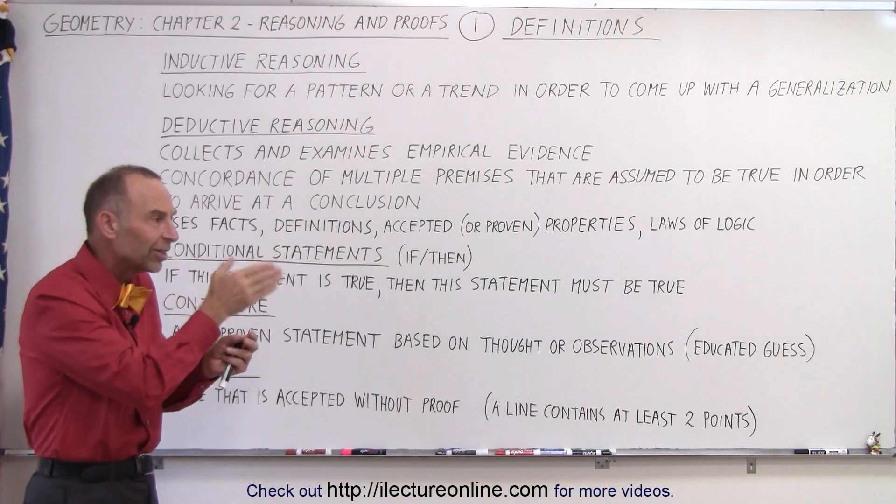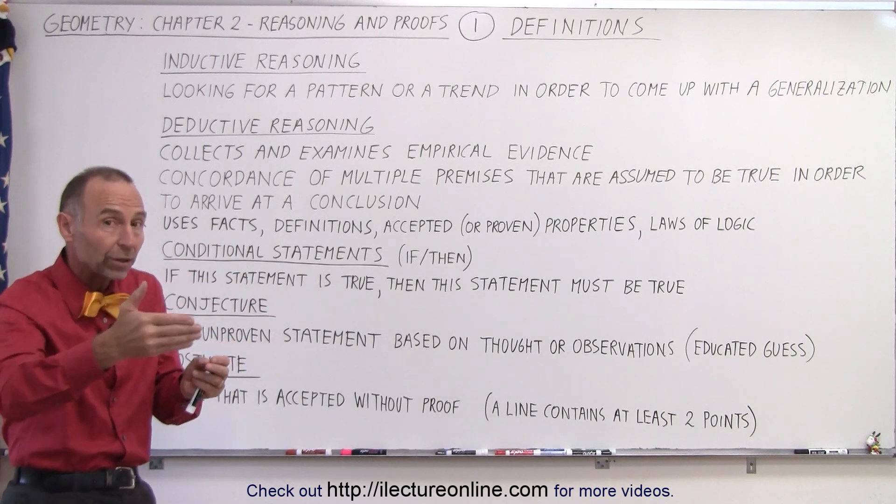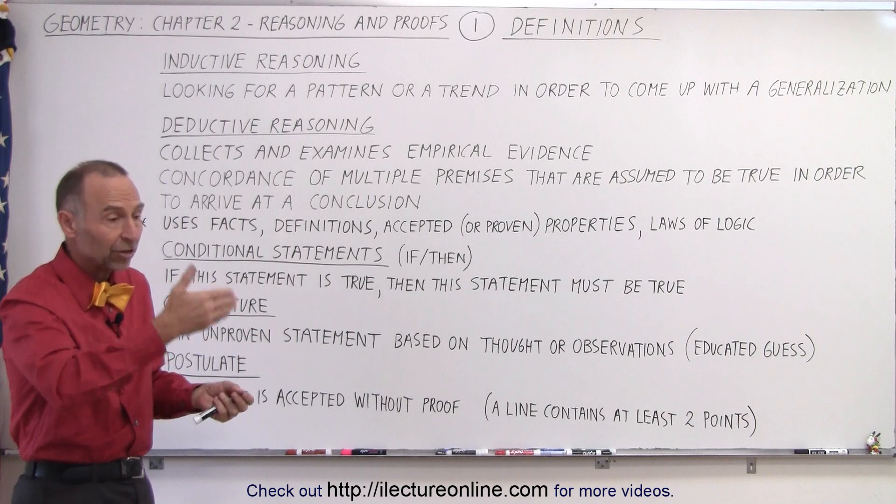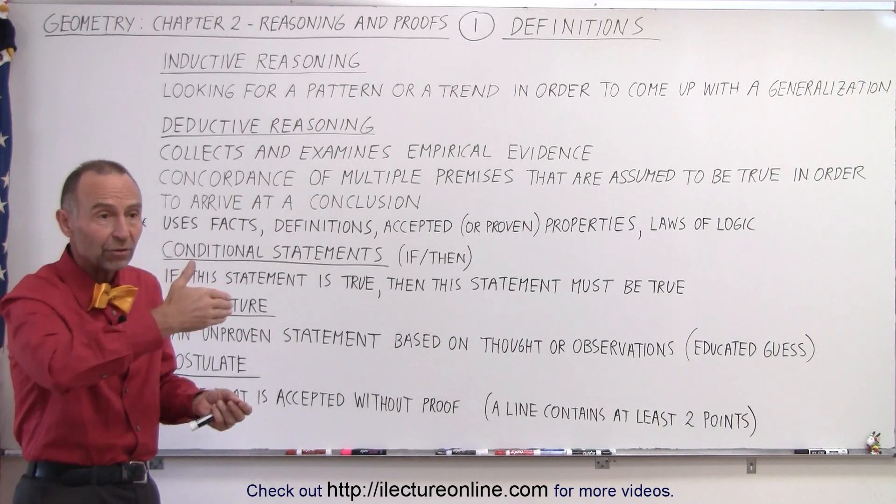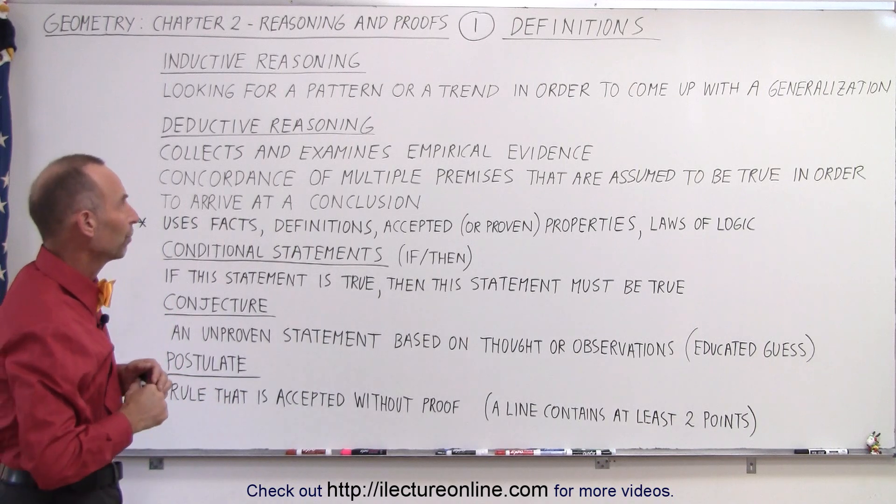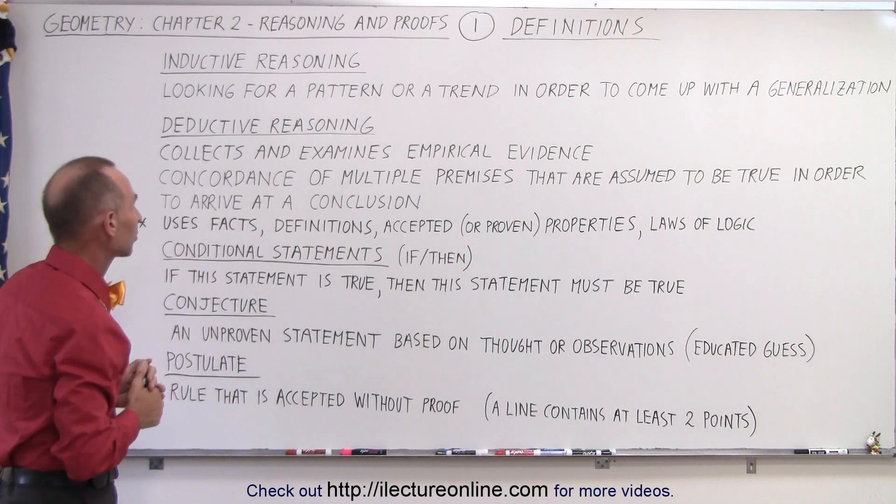For example, we can see that each consecutive number is three more than the previous one. So therefore, we can say in general that every consecutive number is three greater than the previous one, and therefore the next one will be three greater and so forth. So that's what we mean by inductive reasoning.